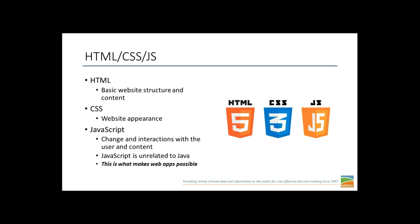The three big components for building a web application are HTML, CSS, and JavaScript. HTML, or hypertext markup language, is what most people are familiar with — it sets up your basic website structure and content. If you're linking to an ACIS Climate Summary Map, that's happening in HTML, and all it's going to do is make an image appear on the screen.